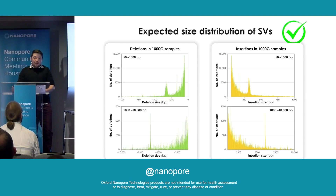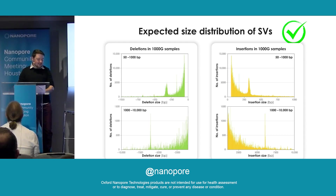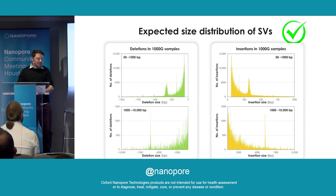Here I have some histograms of the size of the structural variants that we're seeing across the samples, and while there's a lot of data here, the key takeaway is that we're seeing the characteristic profiles of the transposable elements — the SINEs and the LINEs in this data — so that is encouraging that we're capturing structural variation as it should be.